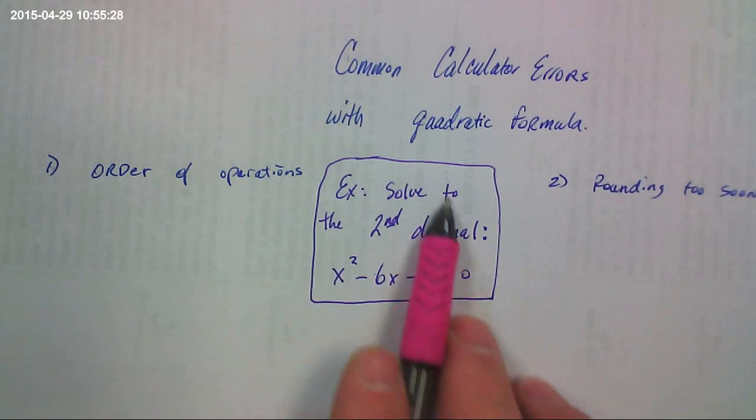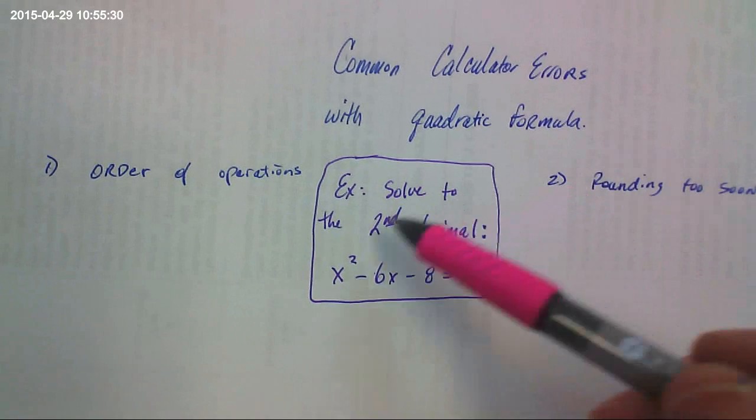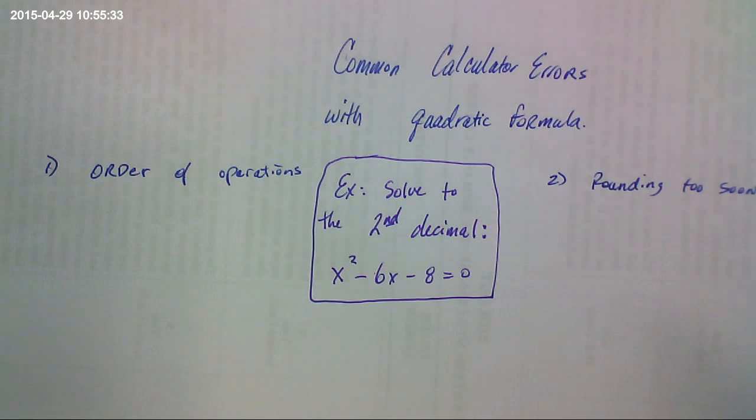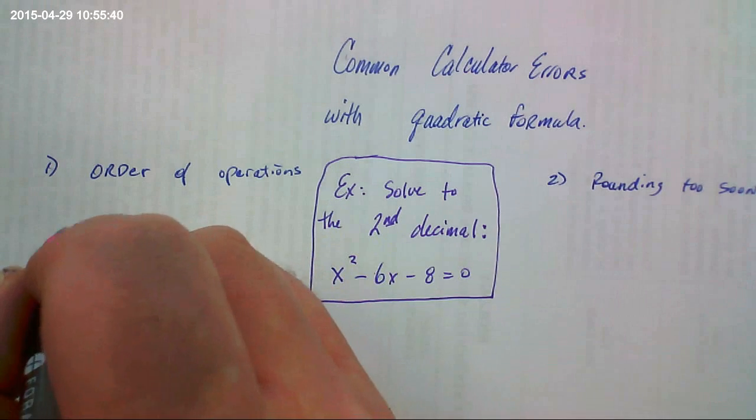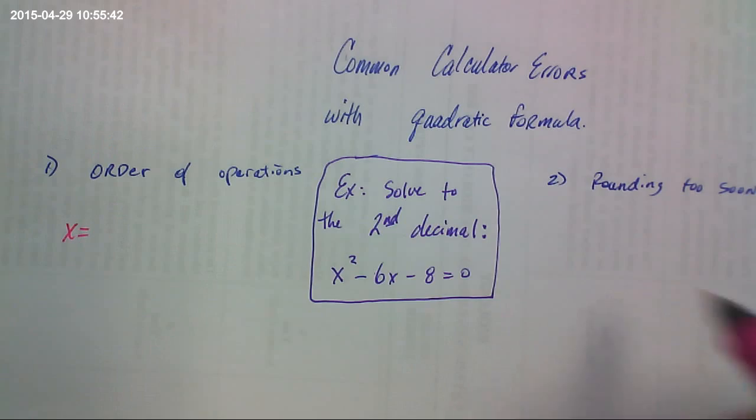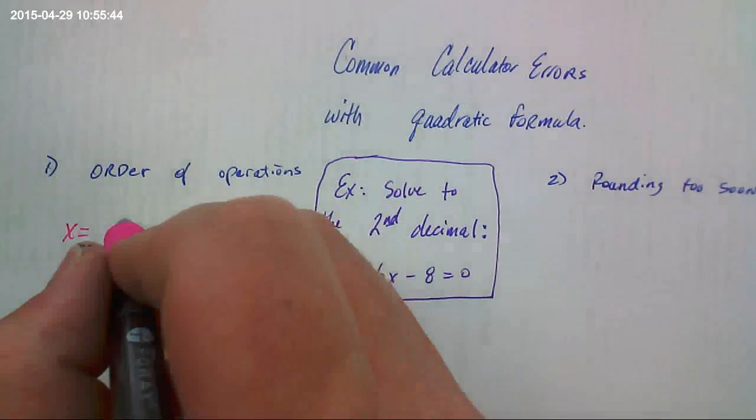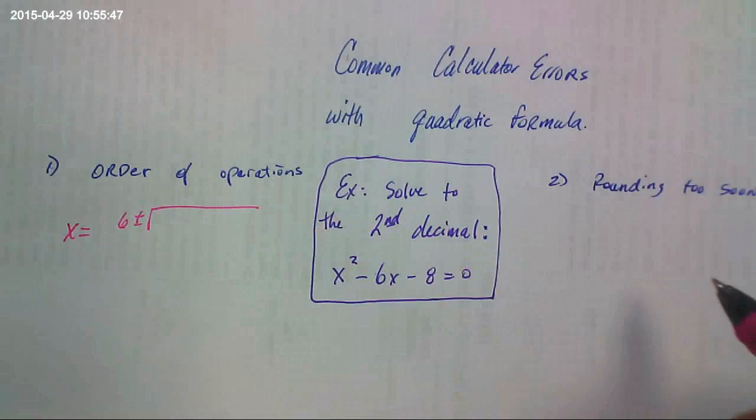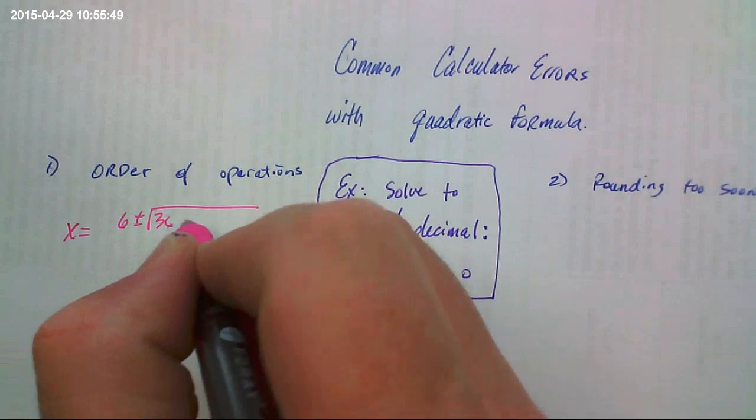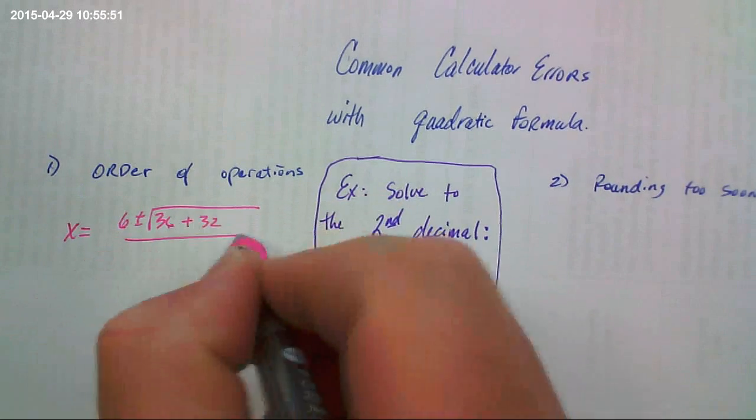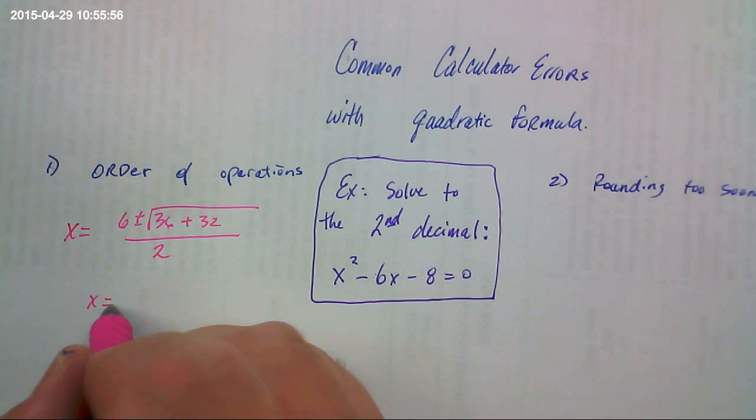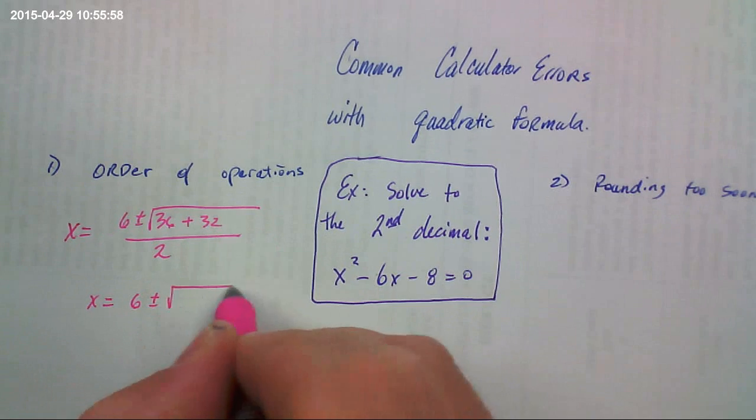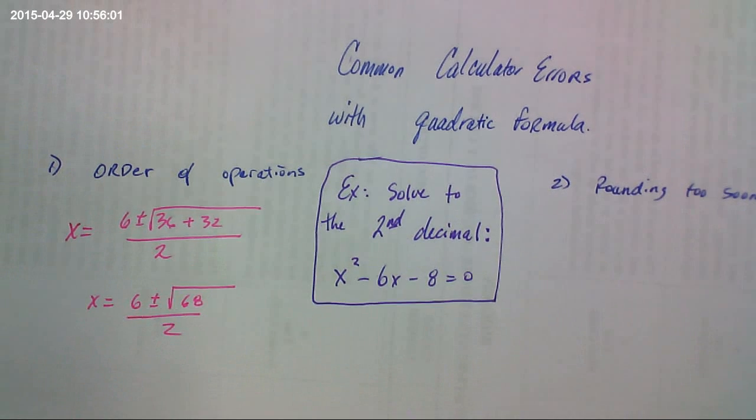We're going to do it with this problem. It says solve to the second decimal place this equation right here. So x equals, using the quadratic formula, the opposite of 6 plus or minus, so that's 36 plus 32 over 2. So this is 68. So x equals 6 plus or minus the square root of 68 over 2.